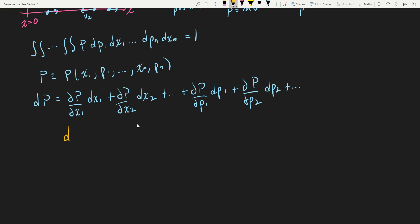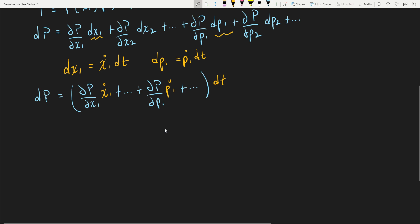What's really interesting is that in physics we know dx1 is ẋ1 dt and dp1 is ṗ1 dt. We're going to substitute those definitions in. What we get is dP, and I'm going to factor this a bit. We have ∂P/∂x1 and then ẋ1, and then we get ∂P/∂p1 and then ṗ1, all the way up to n, and the dt comes outside.